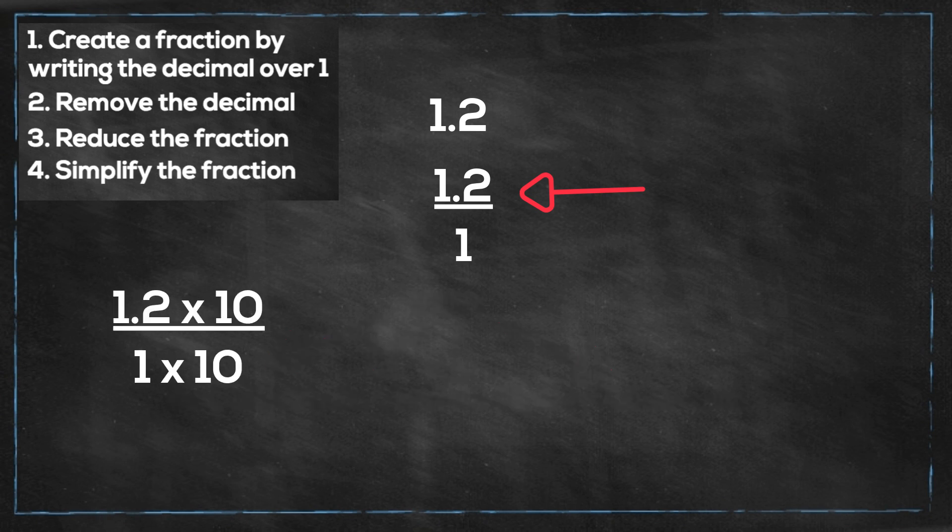When we do the multiplication, we get 12 over 10. Now we can reduce this to a mixed fraction by dividing 12 by 10. That gives us 1 and 2 tenths.